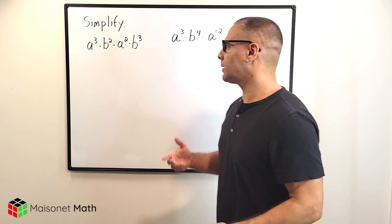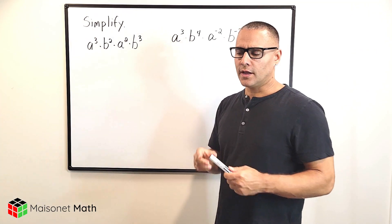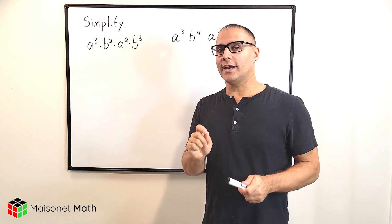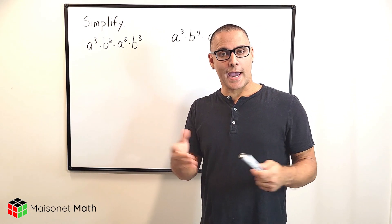So what we have here are a couple of expressions that involve multiplying variables together. Now the rule is that when you are multiplying variables that are the same, you simply take their exponents and add them together.